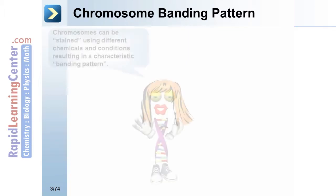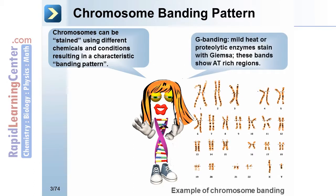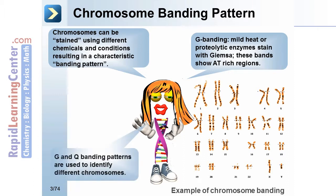Chromosome banding: chromosomes can be stained using different chemicals and conditions, resulting in a characteristic banding pattern. G-banding uses mild heat or a proteolytic enzyme and is stained with Giemsa; these bands show AT-rich regions. G and Q banding patterns are used to identify different chromosomes.